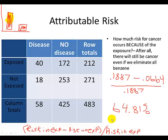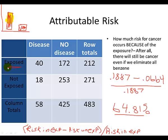What does that 64.81% mean? It means that 64.81% of the disease among those who were exposed is directly attributed to the exposure. In other words, 64.81% of the disease in the exposed group occurs because of that exposure.